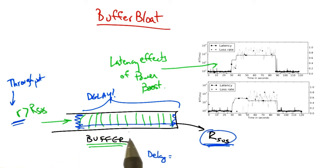The delay that the packet will see in the buffer is the amount of data in the buffer divided by the rate that the buffer can drain.